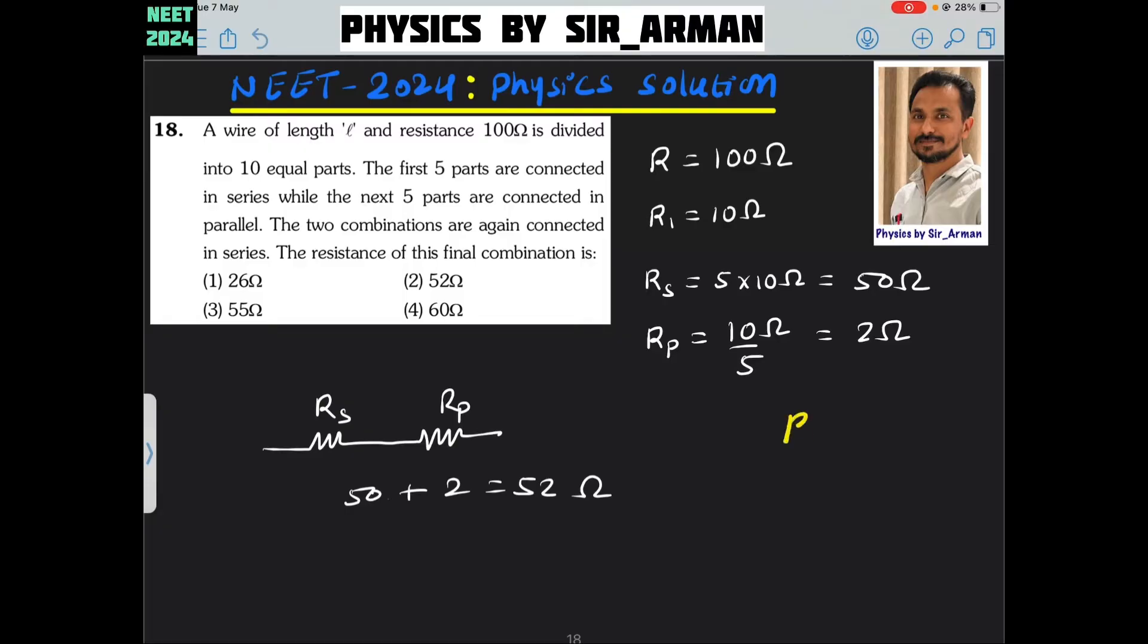We know that R equals rho L by A, so R is proportional to length. If you divide it into 10 equal parts, then each part will have resistance of 10 ohm.